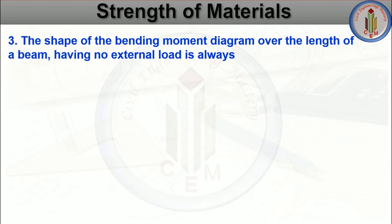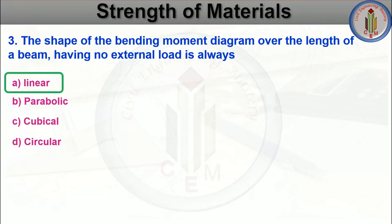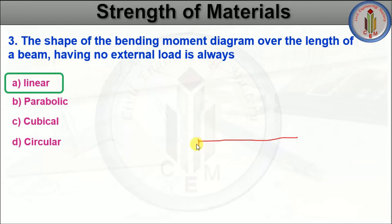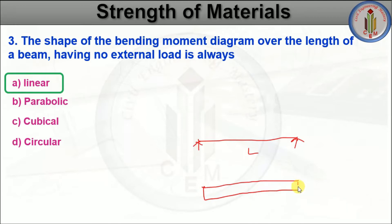The shape of a bending moment diagram over the length of a beam having no external load is always — linear, parabolic, cubical, or circular. The answer is linear. Consider a simply supported beam of length L with no load acting on it — the bending moment diagram will be linear because there is no load. If a point load or uniformly distributed load were acting, the bending moment diagram would be different.